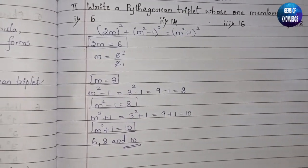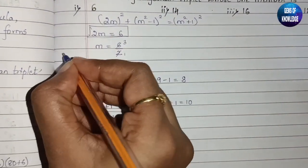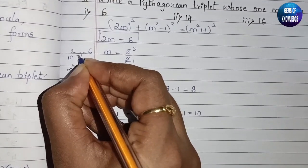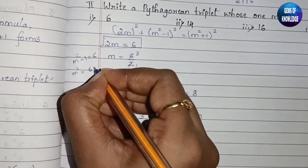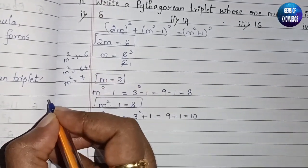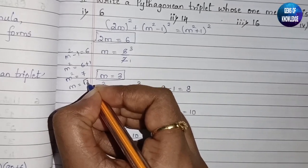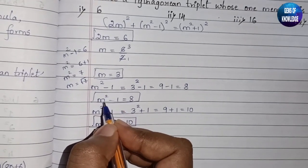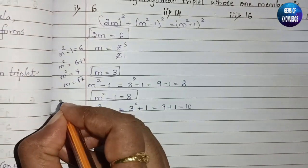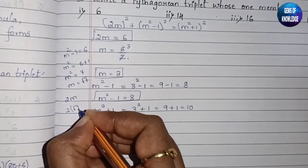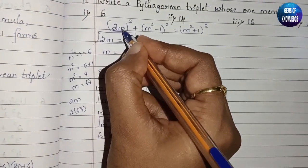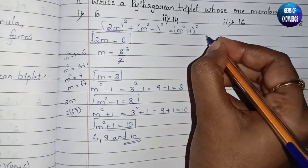If instead we took 6 as m²-1, then m² = 7, meaning m = √7, which gives complicated terms like 2√7. That is why we consider 6 as 2m — it gives a natural number value for m, making the calculation straightforward. Similarly, we move on to the second case with 14.